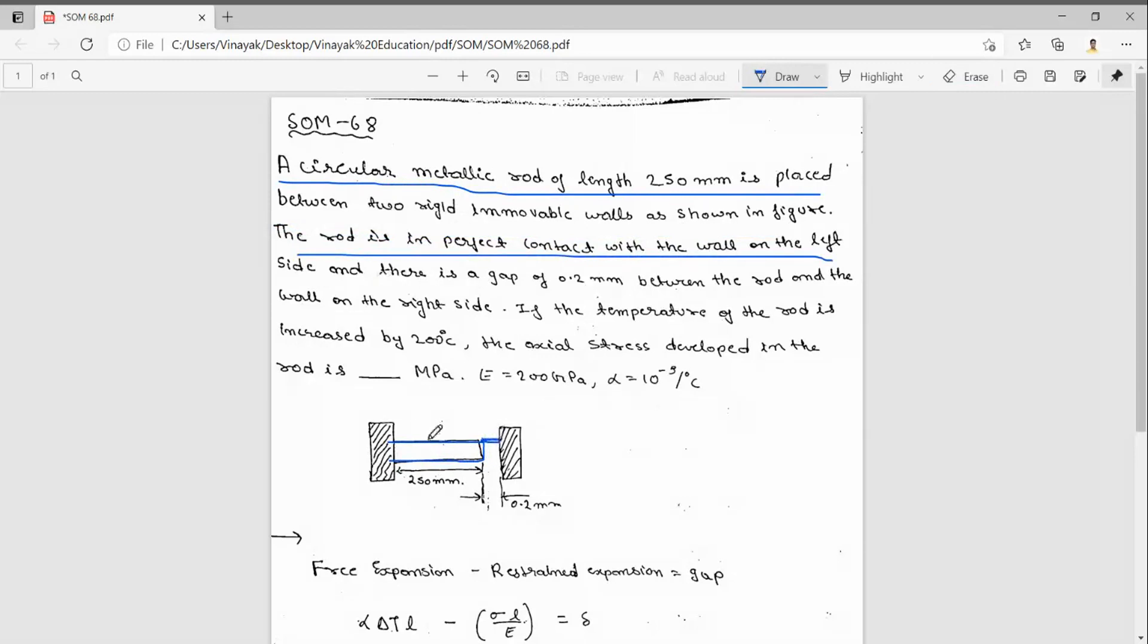Here we can see 0.2 mm gap is there, and this side it is fully fixed. Now if the temperature of the rod is increased by 20 to 200 degrees Celsius, then what axial stress will develop in the rod? We want to see that.